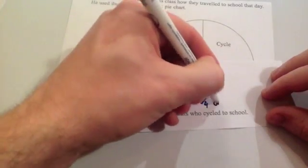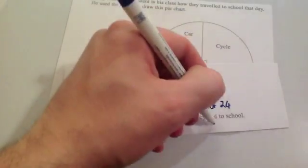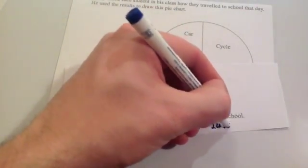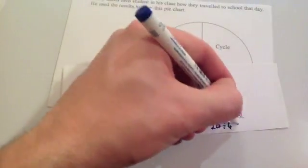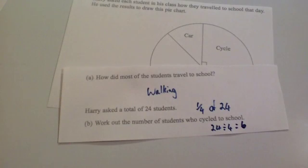So we need to work out a quarter of 24. To get a quarter of 24, we just do 24 divided by 4. And 24 divided by 4 is 6. So that means that 6 of the students cycled to school.